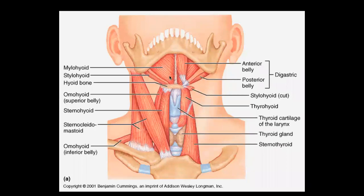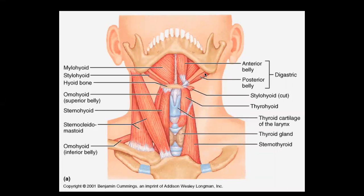The anterior triangle is subdivided into four small triangles. The first is the triangle between the two bellies of the digastric and the base of the mandible — this is called the digastric triangle or submandibular triangle. The boundaries are: anteriorly the anterior belly of digastric, posteriorly the posterior belly of digastric, and the base formed by the base of the mandible.